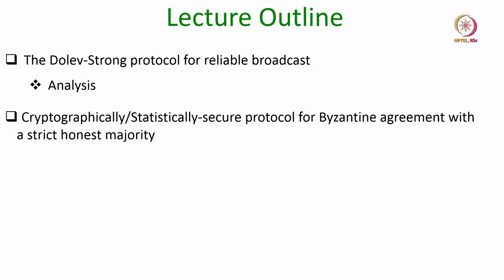Hello everyone, welcome to this lecture. In this lecture we will do the analysis for the Dolev-Strong protocol for reliable broadcast which we have discussed in the last lecture. And then using the conversion from reliable broadcast to Byzantine agreement, we will see our cryptographically and statistically secure version for Byzantine agreement with a strict honest majority, namely with the condition t less than n over 2.